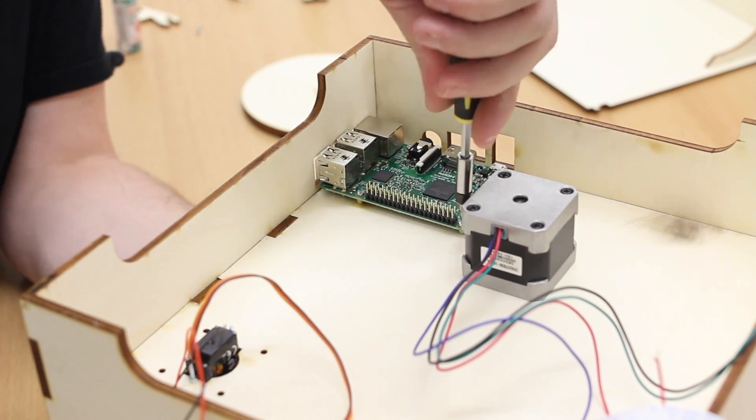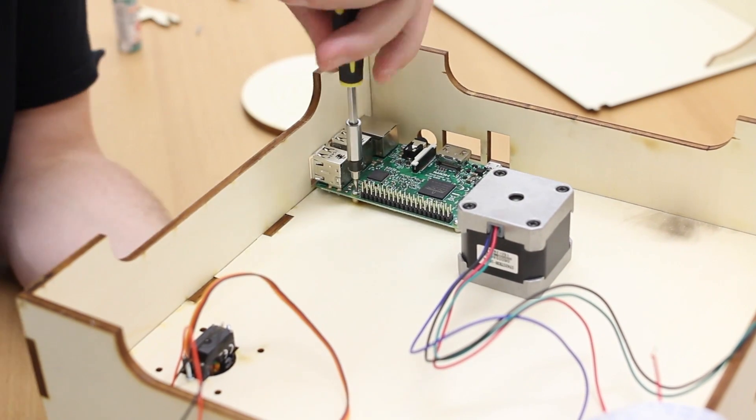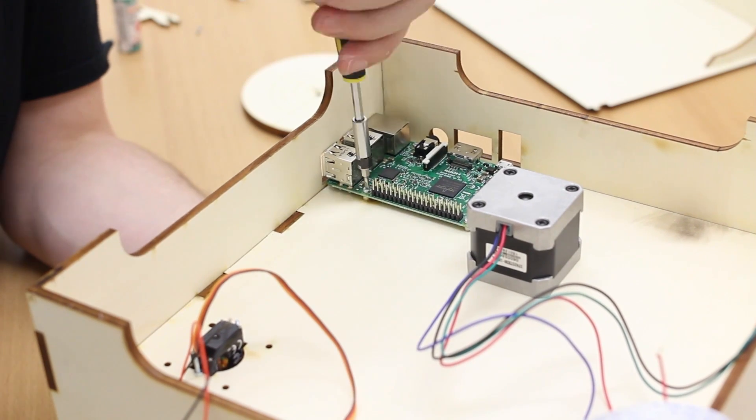Now we mount the Raspberry Pi to the bottom of the base plate. We use four screws.